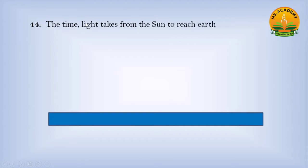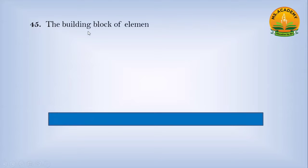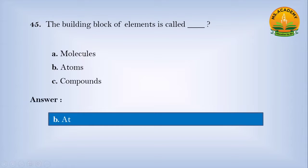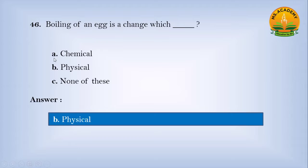The time light takes from the sun to reach Earth: option A 25 minutes, option B 45 minutes, option C 8 minutes — answer is C, 8 minutes. The building blocks of elements are called: option A molecule, option B atoms, option C compounds — answer is B, atoms. Boiling of an egg is which kind of change? Option A chemical, option B physical, option C none of these — answer is B, physical change.